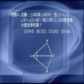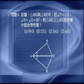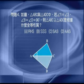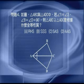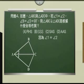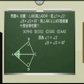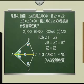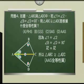问题四如图，三角形ABC与三角形ADC中，若角1等于角2，角B等于角D等于90度，则三角形ABC全等于三角形ADC，这是根据什么全等性质？因为角1等于角2，角B等于角D等于90度（已知条件），线段AC等于线段AC（共用边），所以根据AAS全等性质，三角形ABC全等于三角形ADC，答案B。